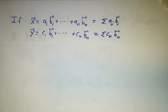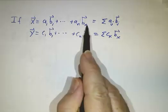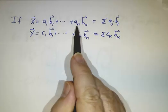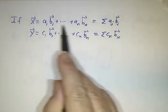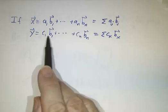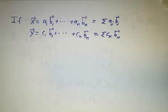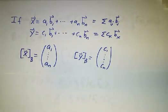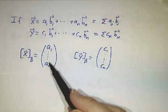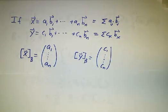If x and y are vectors, they can be written as linear combinations of the basis vectors. If x is a linear combination with coefficients a_1 through a_n, and y has coefficients c_1 through c_n, then the coordinates of x in the b basis is the column a_1 through a_n, and the coordinates of y is the column c_1 through c_n.